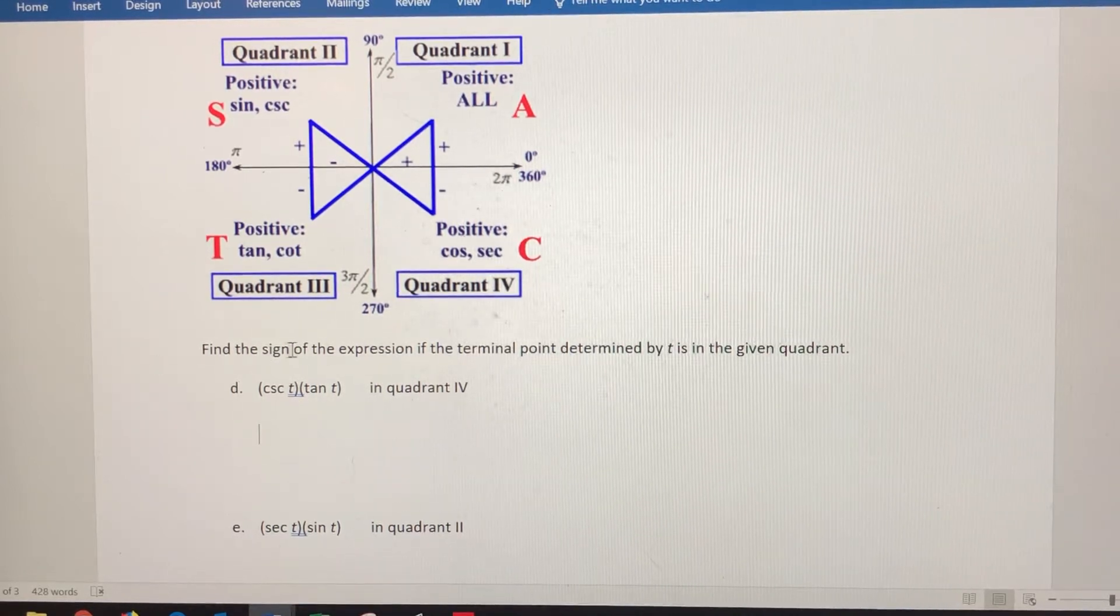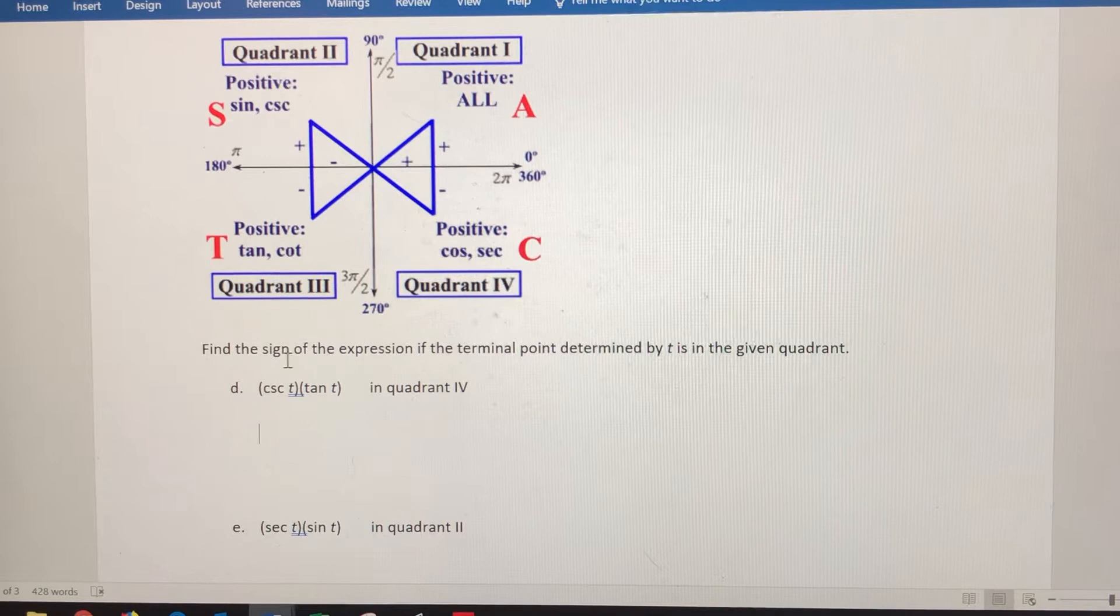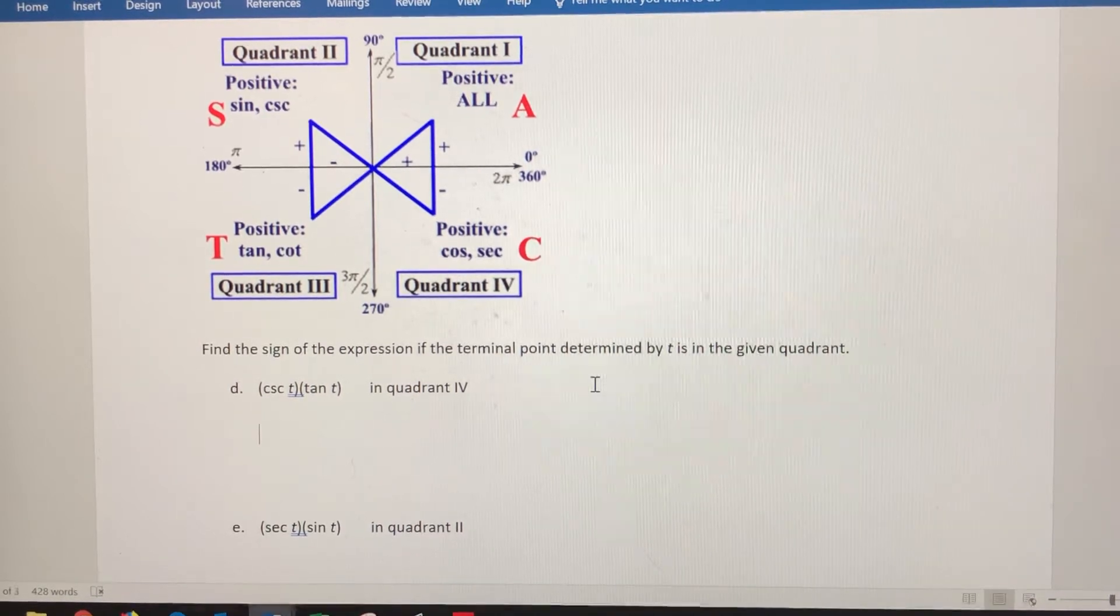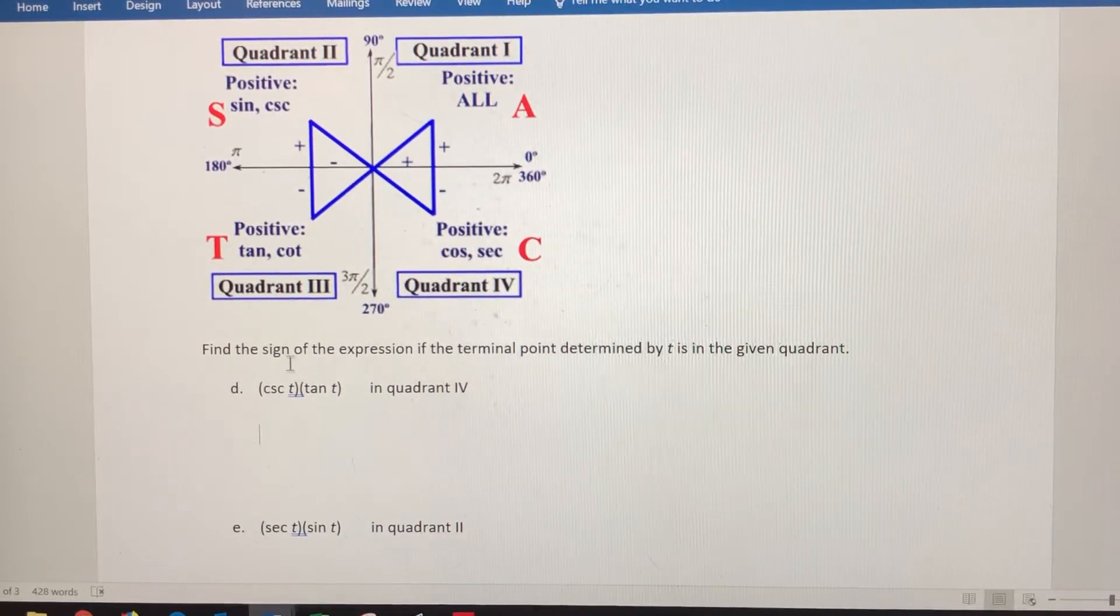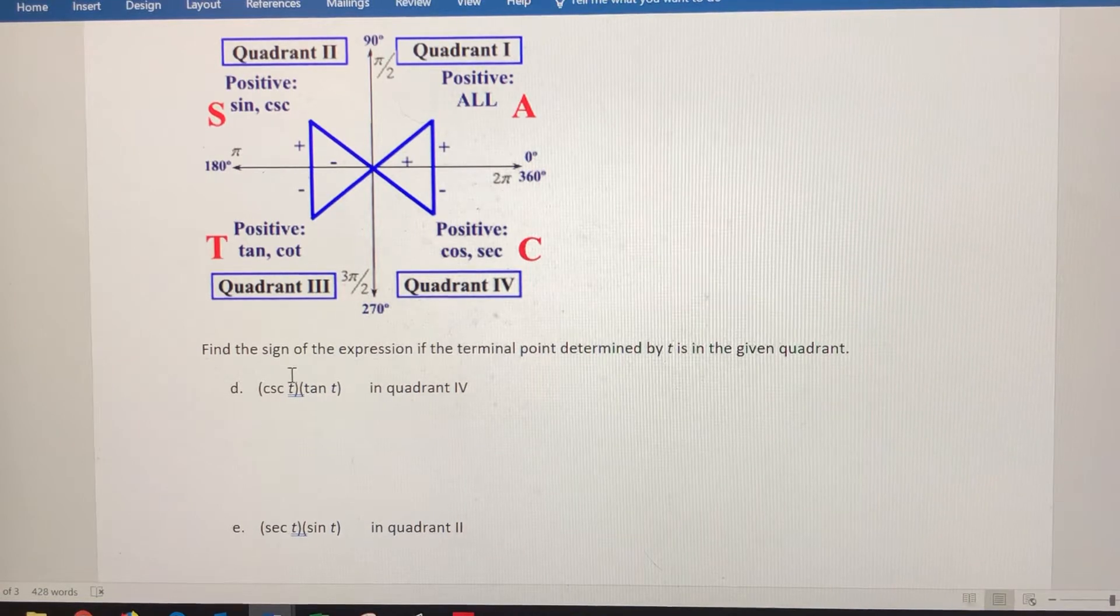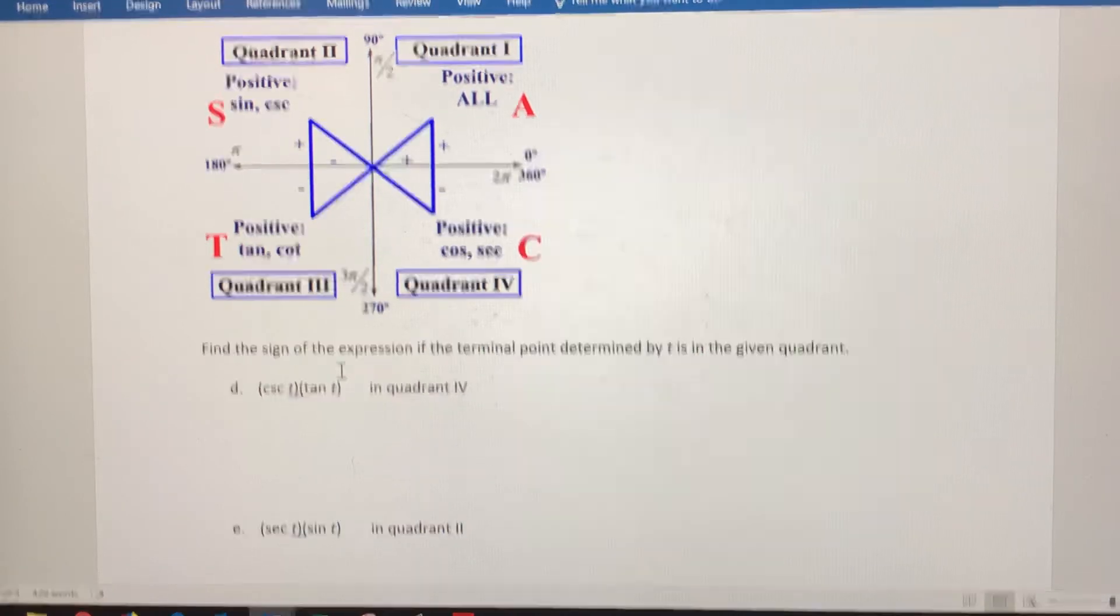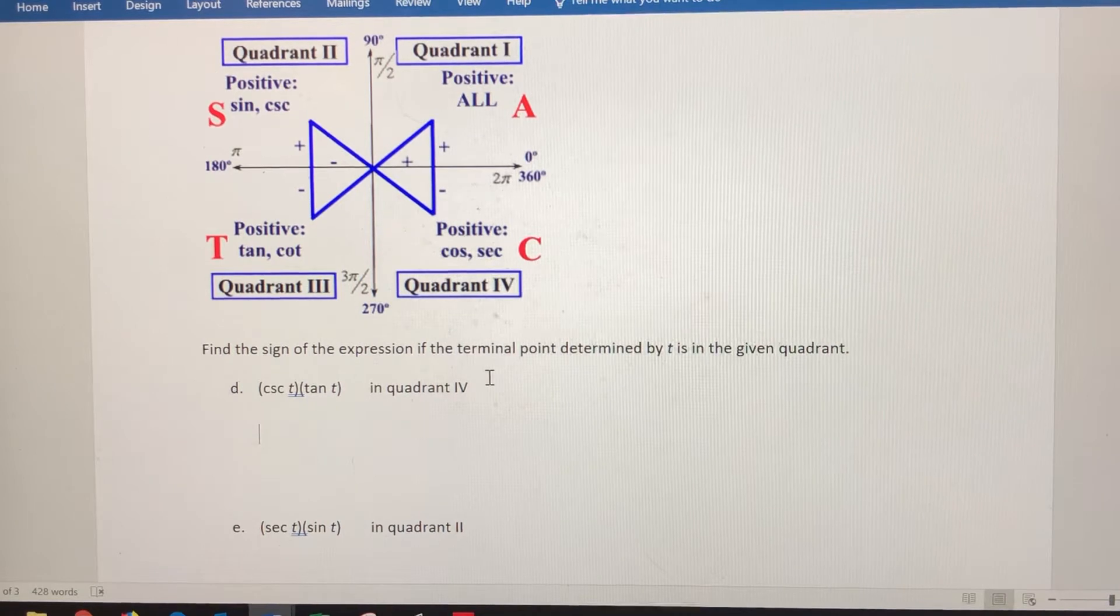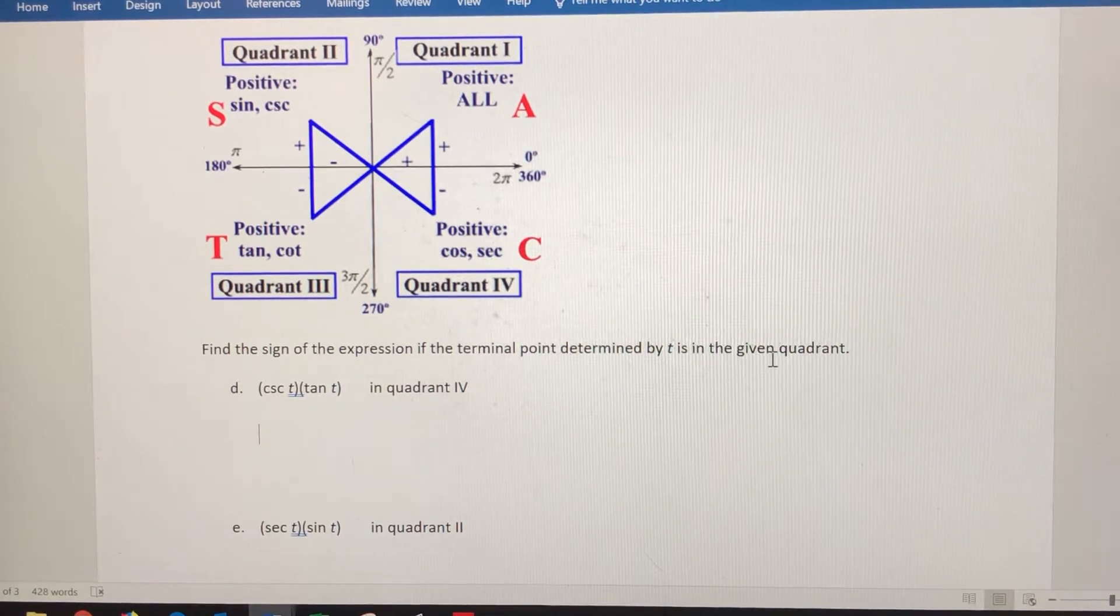In this video, we're going to find the sign of an algebraic expression involving trig functions, determined by where t as a real number or the terminal point associated with that lies in a given quadrant.